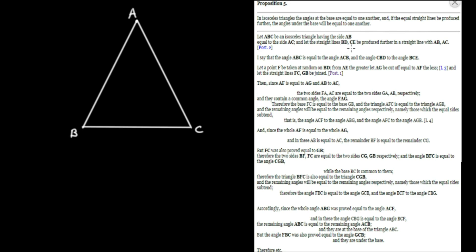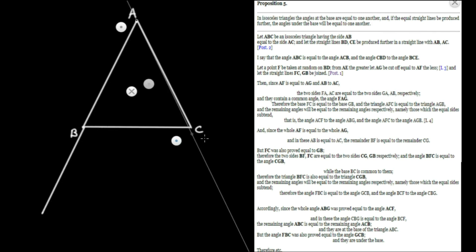Let the straight lines BD and CE be produced further in a straight line with AB and AC, which we can do by Postulate 2. So we're going to extend the left-hand side of the isosceles triangle a bit further, and likewise extend the other side. We'll label those points D and E — we just extend the two sides of the isosceles triangle.